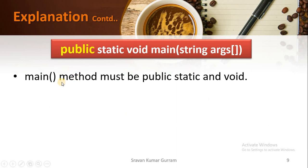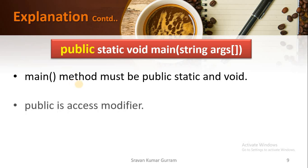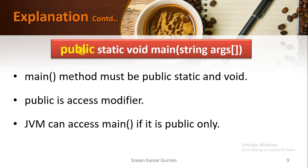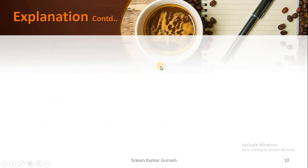The main method must be public, static, and void. Public is an access modifier — complete details will be covered in a special topic on access modifiers. The access modifier of main must be public so that JVM can access this main method.